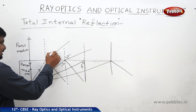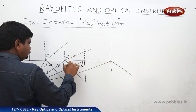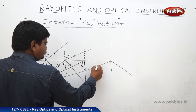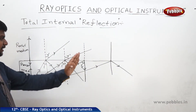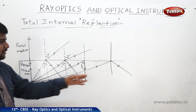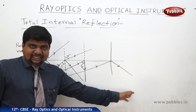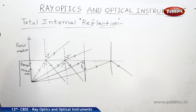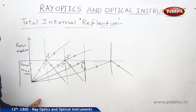We should mark this with arrow marks. Like this, total internal reflection takes place. That means while varying the angle, observe at which angle of incidence the light is totally reflecting into the medium — this is called total internal reflection. This is also possible when light is traveling from rarer to denser.